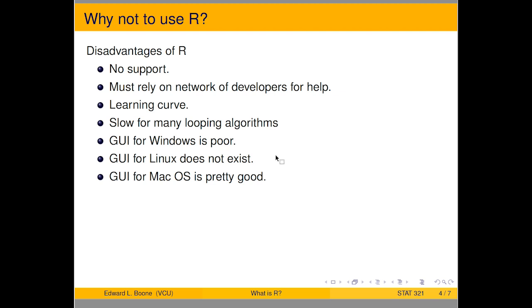R is slow for looping algorithms and may have some memory issues. The graphical user interface for Windows is poor, and for Linux it doesn't exist. However, the graphical user interface for macOS is actually not too bad.